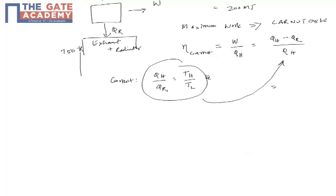Based on this, this will be modified as TH minus TL or TR if you want to write. So, let's write TR by TH. We know these temperatures, so 1500 minus 750 by 1500.